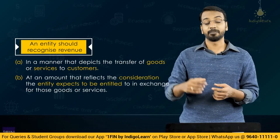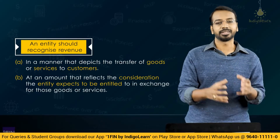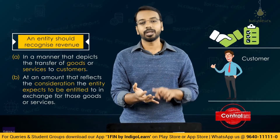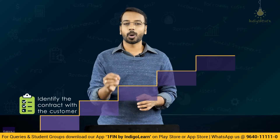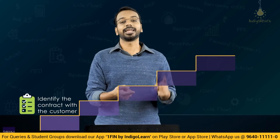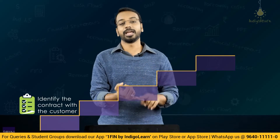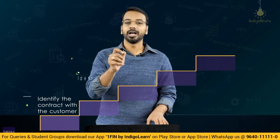The core of this standard is around contract, customer, and control. You need to have a contract with the customer, and a lot of emphasis is on the control-related aspect. To recognize revenue, IndAS 115 prescribes a five-step approach. The first step is identifying the contract with the customer. There has to be a contract and there has to be a customer. The contract can be oral, written, or implied — we will come to that. The entity has to identify a contract with the customer.